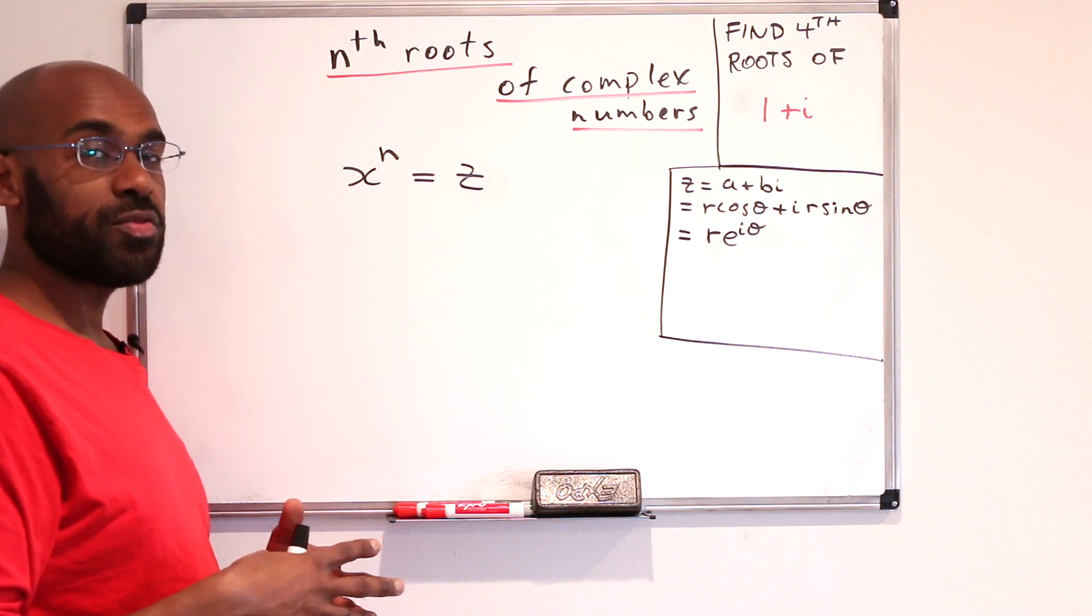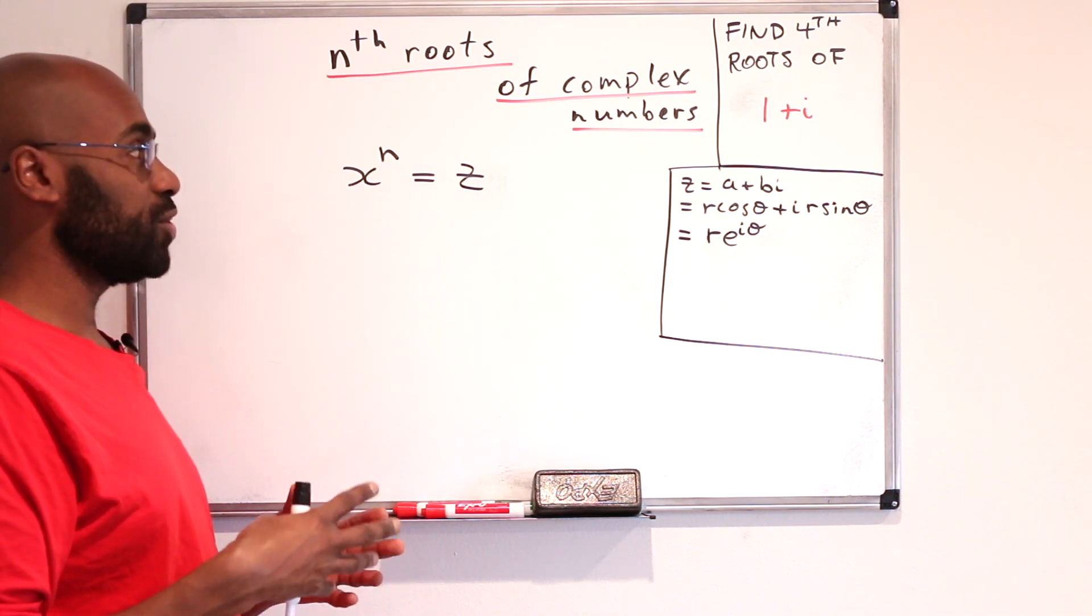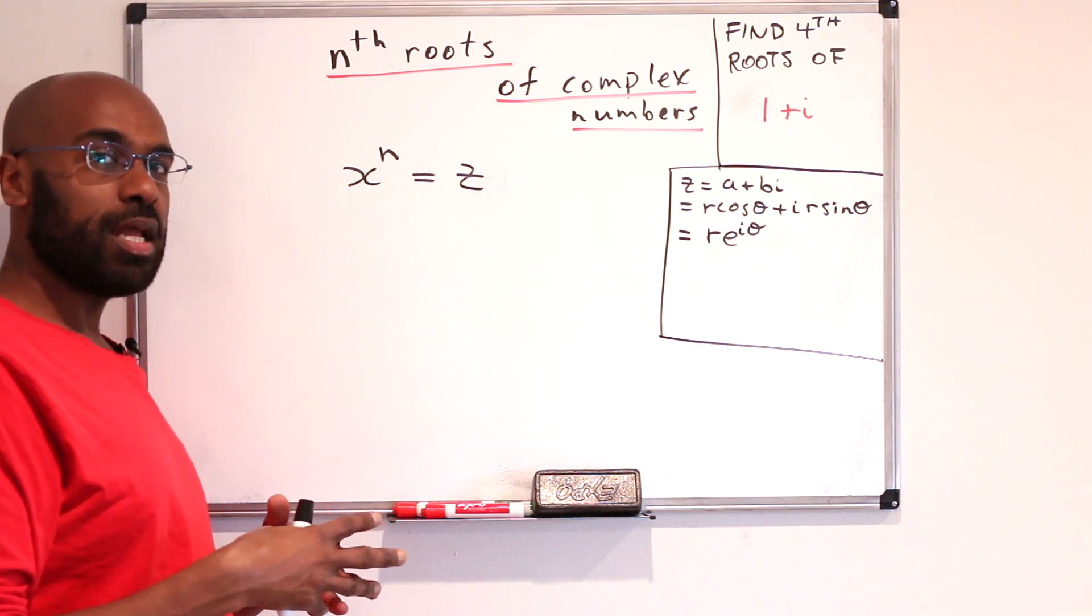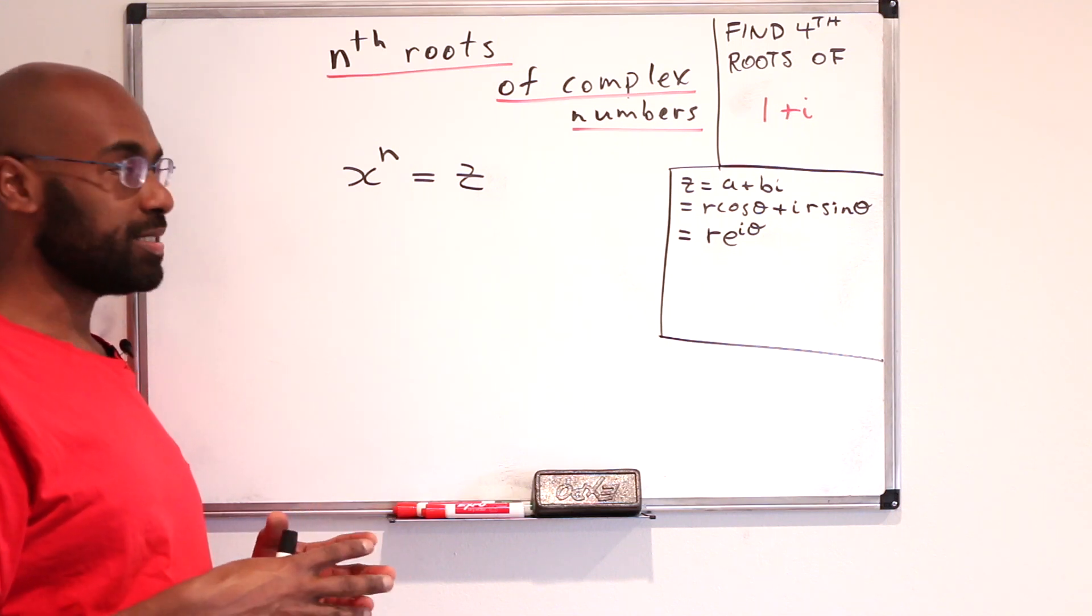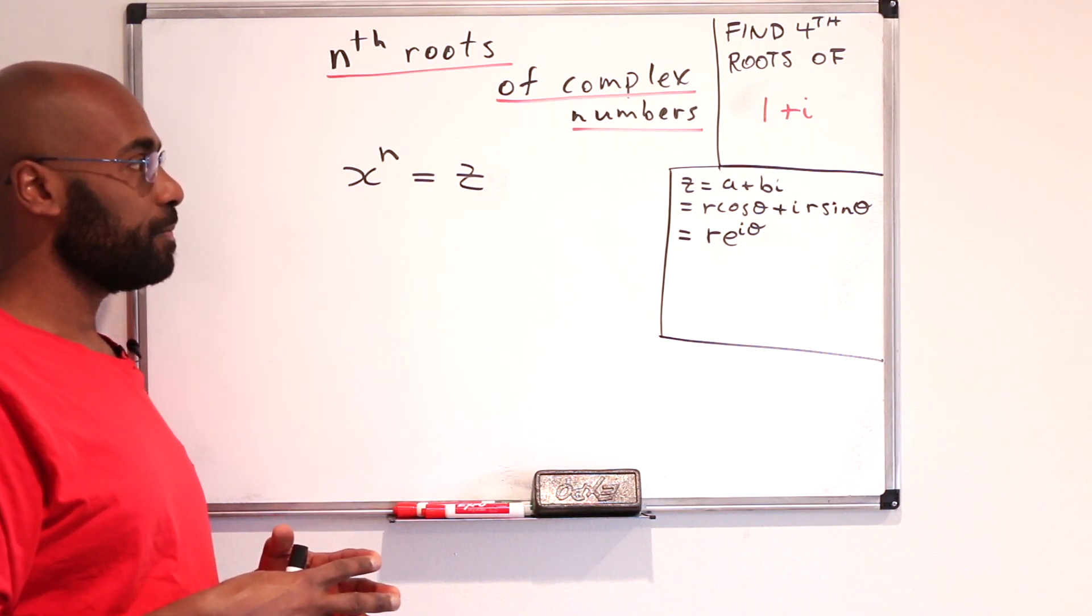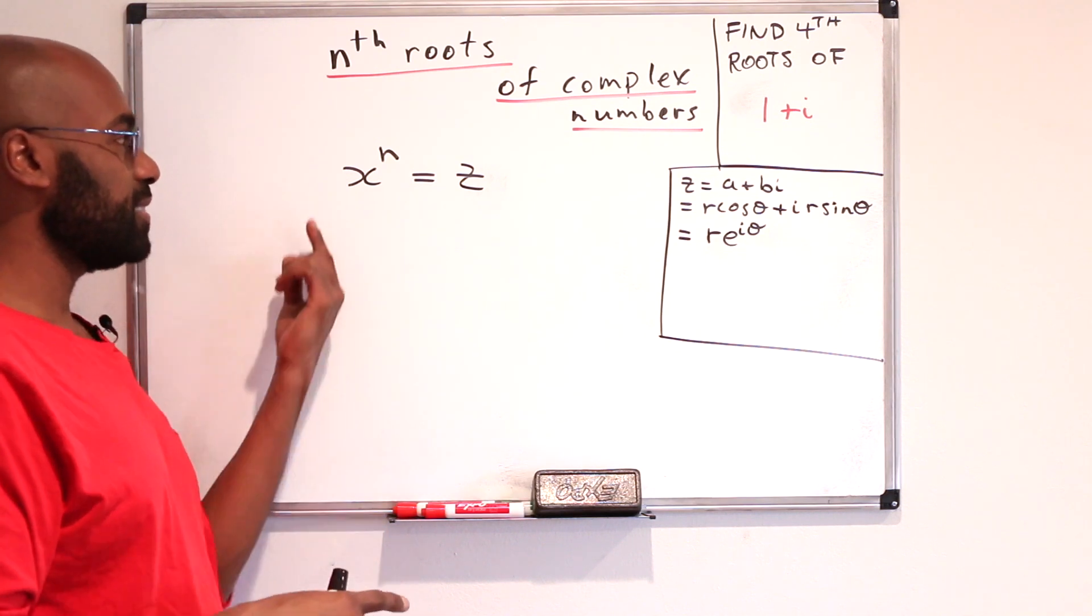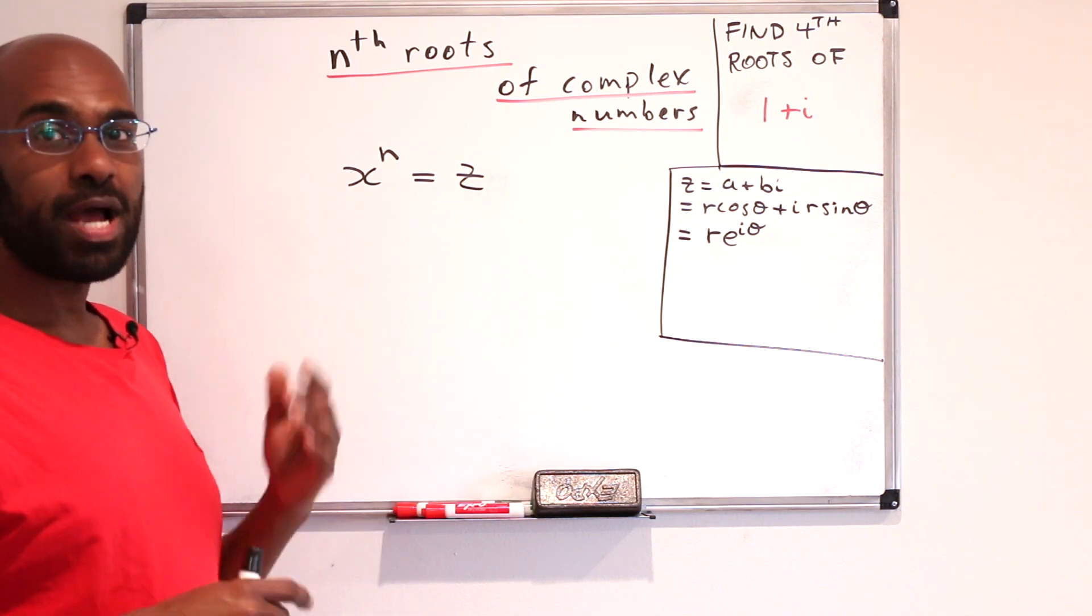First of all, there are at most n roots to this particular equation for a fixed z. And the reason is because of the fundamental theorem of algebra, which states that if you have a degree n polynomial, it has at most n distinct roots. So, if we can find n complex numbers that satisfy this equation, then we're happy.